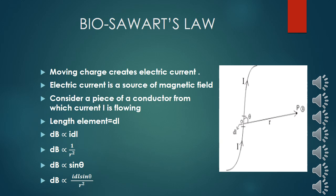When there is a moving charge, there is an electric current, and this electric current is the source of the magnetic field. Now, if electric current is our source of magnetic field, then how much current gives how much magnetic field? We know the intensity of the magnetic field is defined as one Tesla — that gives one Newton force to one Coulomb charge moving with a velocity of one meter per second. The current, the moving charge, creates this one Tesla of magnetic field.